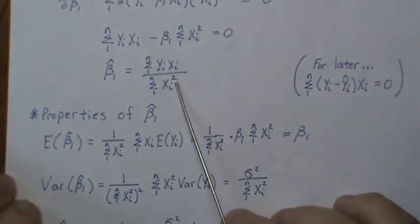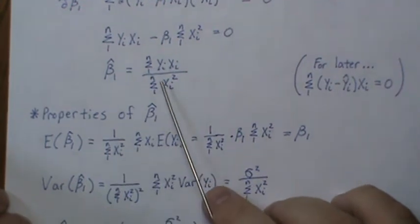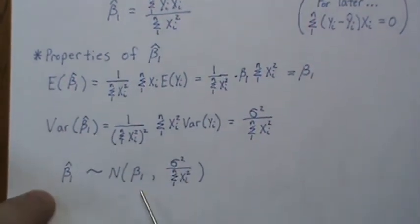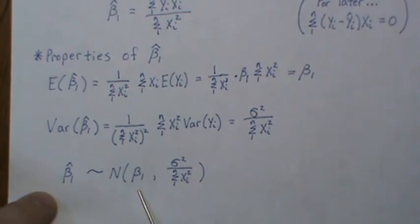So, clearly, beta one hat is a linear combination of the y's, so it's normally distributed, has a mean beta one, and a variance sigma squared over the sum of the xi squared.